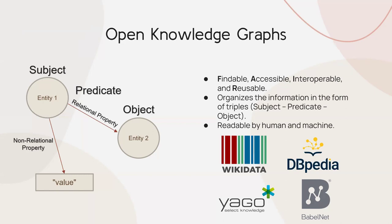This makes these databases both human-readable and machine-readable. Some of these databases are FAIR — findable, accessible, interoperable, and reusable. This is what we call open knowledge graphs; they are available for free across the internet. Examples are Wikidata, Wikipedia, Yahoo, and BabelNet. The latter is developed by Sapienza NLP and is well known here in Italy.